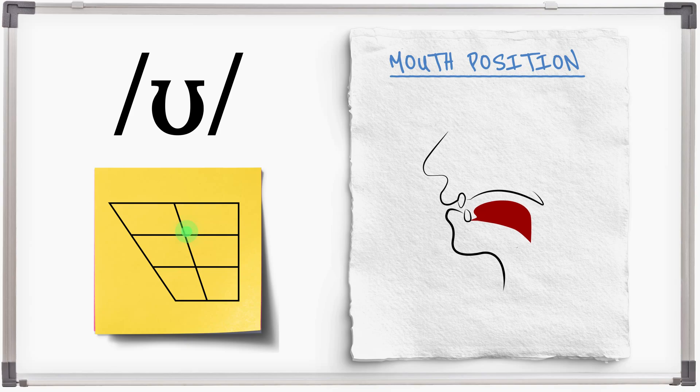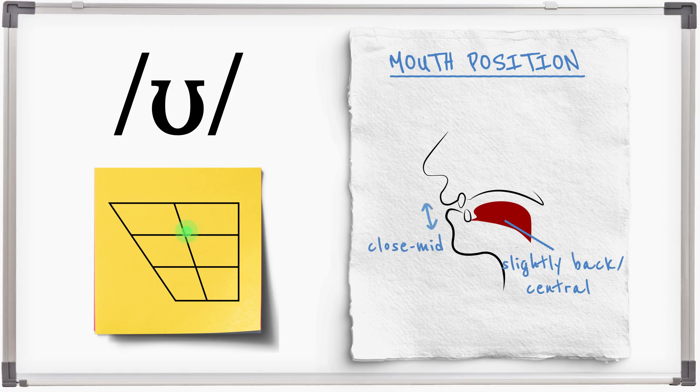U is a short sound made with the tongue pulled slightly back or central. U. The jaw close mid and the lips relaxed. U.